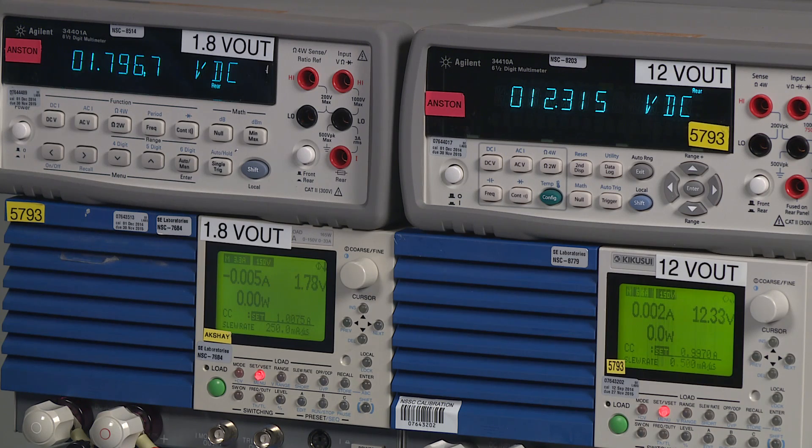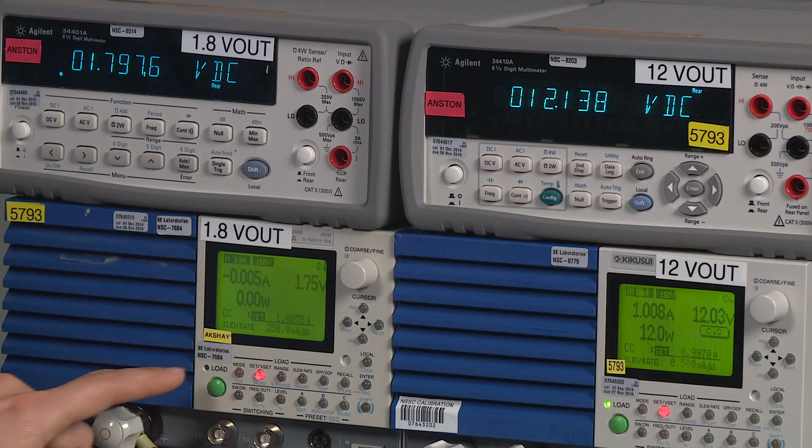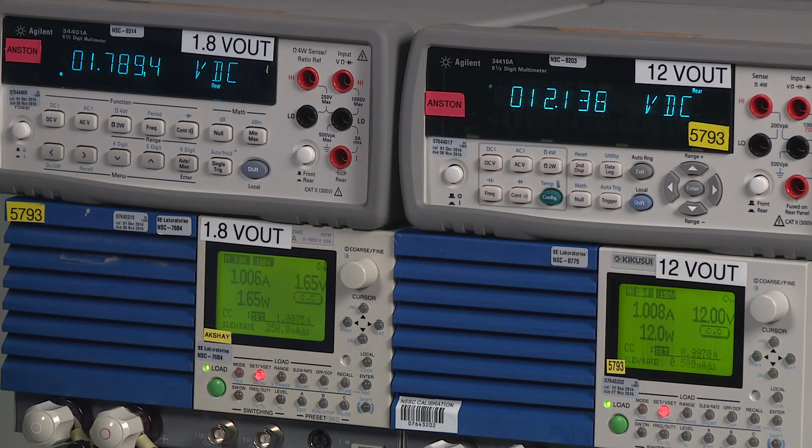Now let's further stress the system by applying a 1 amp load on each rail. Now in spite of a line transient and loads applied to the rails, we have a clean regulation.